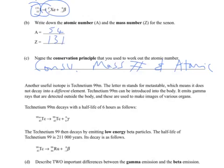Another useful isotope is technetium-99M. The letter M stands for metastable, which means it does not decay into a different element. Technetium-99M can be introduced into the body that emits gamma rays that are detected outside the body, and these are used to make images of various organs. Technetium-99M decays with a half-life of six hours. You can see the gamma radiation that's given off, and all the conservation of mass numbers and atomic numbers means they stay the same.